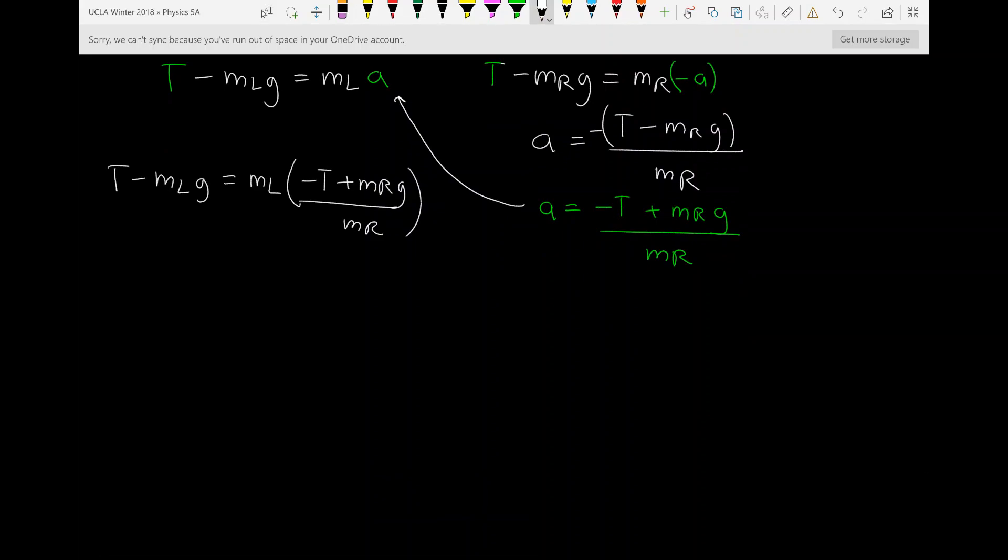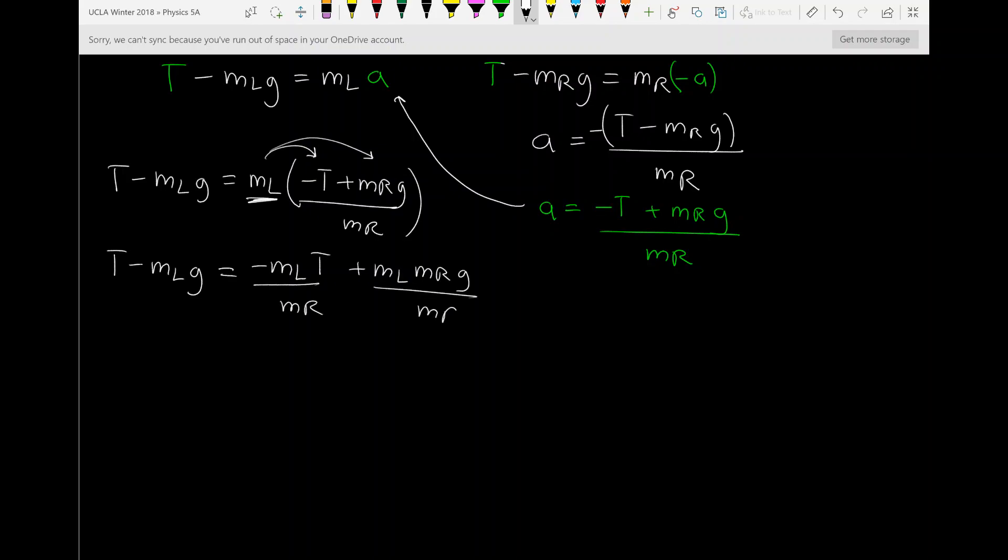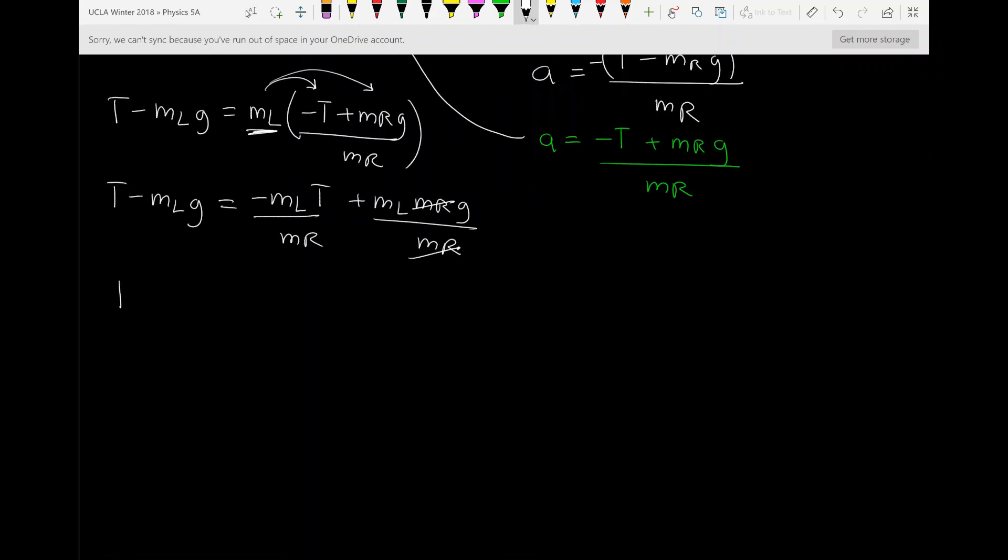Now I'm just going to distribute this ML over to this and this. And I can say T minus ML G is equal to negative ML T plus ML MR G. And each of those is over MR and MR. As you can see, those two things cancel out. Now I have T minus ML G is equal to negative ML over MR T plus ML G.